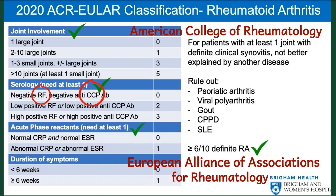The third parameter is acute phase reactants — the ESR (erythrocyte sedimentation rate) and the CRP (C-reactive protein). The last parameter assessed is the duration of symptoms. So the parameters used in this diagnostic criteria are: the joints involved, the anti-CCP, the rheumatoid factor, the ESR, the CRP, and the duration of symptoms.